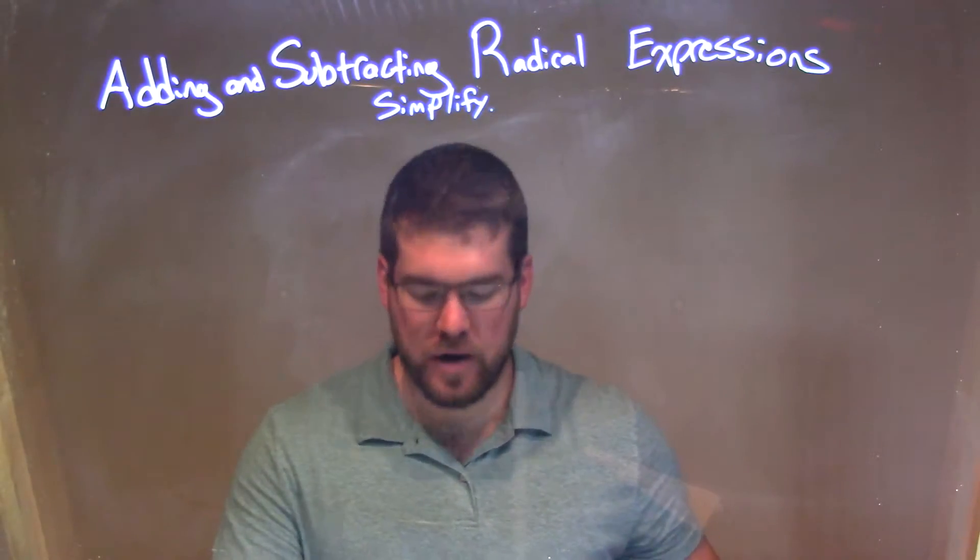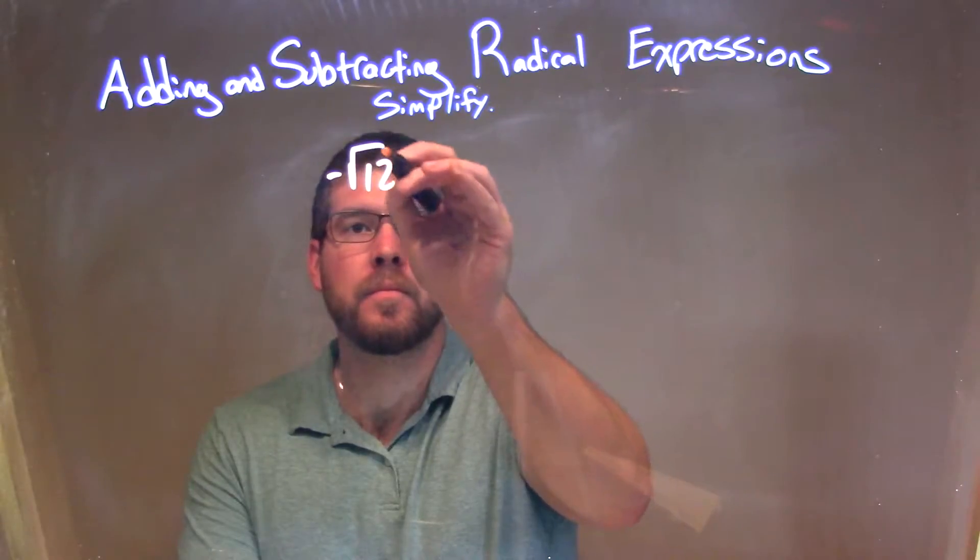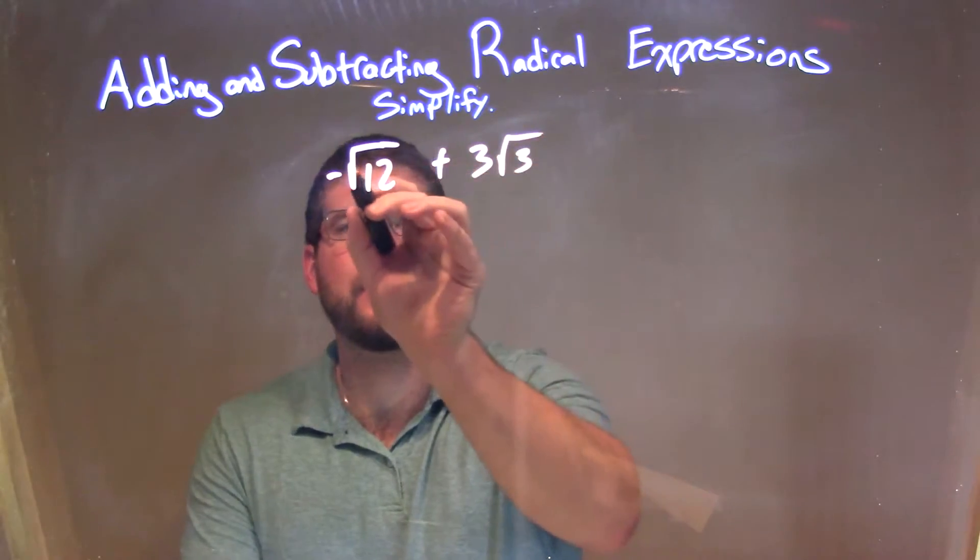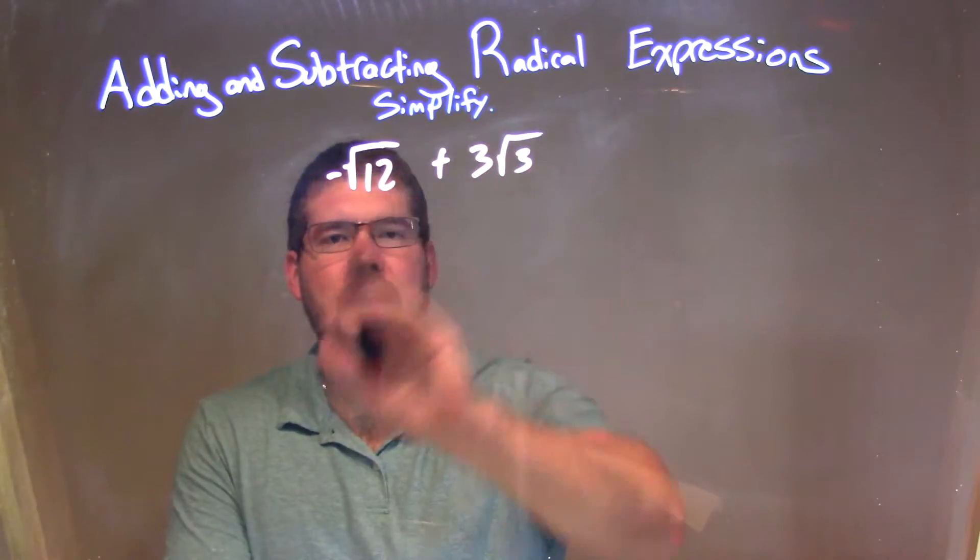So if I was given this expression, negative square root of 12 plus 3 square root of 3, what I want to do here is I want to see if I can get both of these to have a square root of 3.